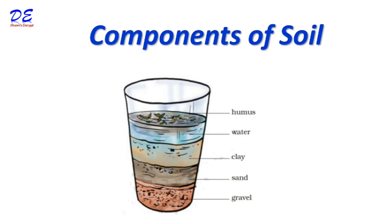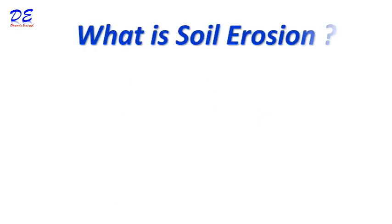Now let's look at the components of soil. If we take some soil in a glass and pour some water in it, stir it well with a spoon, and let it settle, we can see the components of soil. At the bottom we see gravel, then sand above the gravel, then clay above the sand, then water above the clay, and humus on the top.